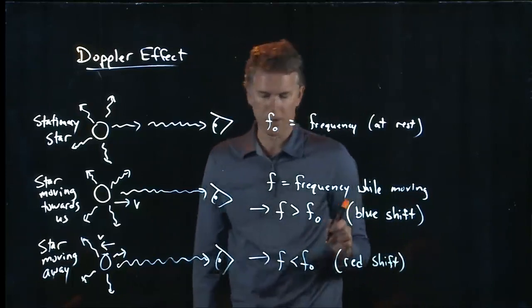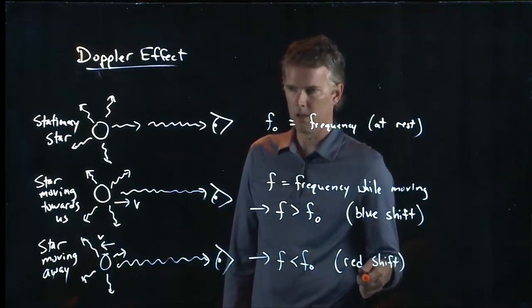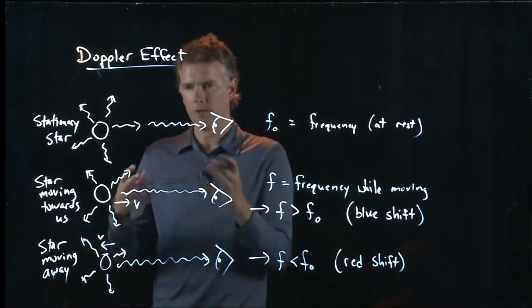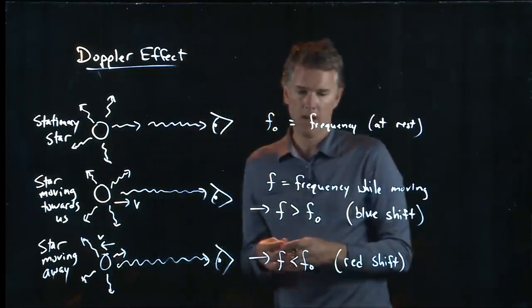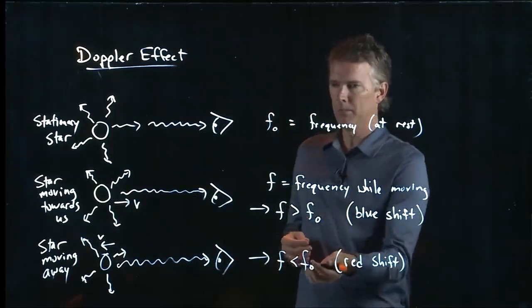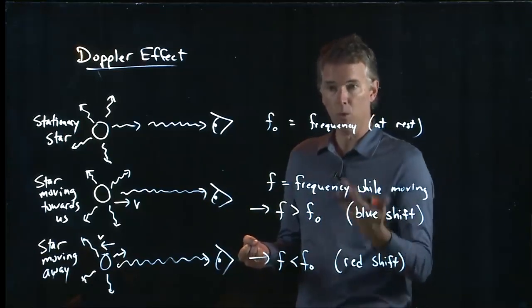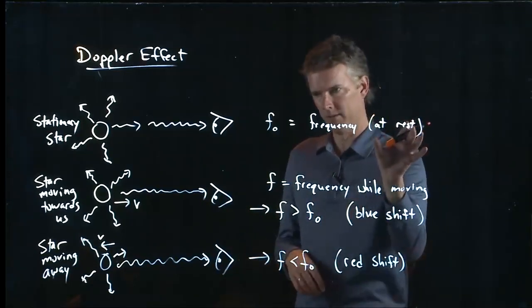And this is probably something that you've heard about in astronomy classes. They talk about the redshift of different stars out there. And what it means is the light that we observe has a different frequency than it should, than it would if it was at rest.